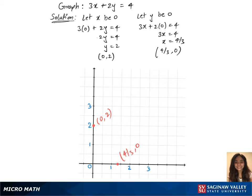That's right next to it, 4 over 3, 0. And draw a line which passes through those two points.